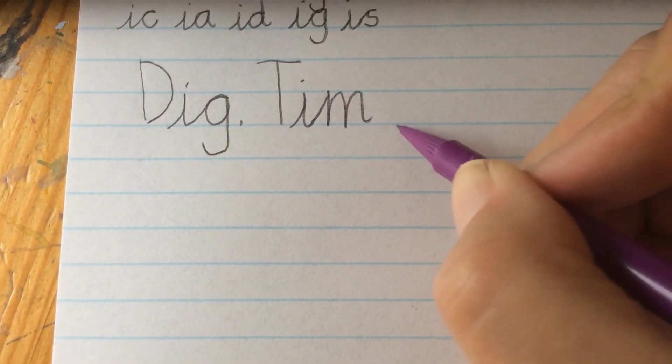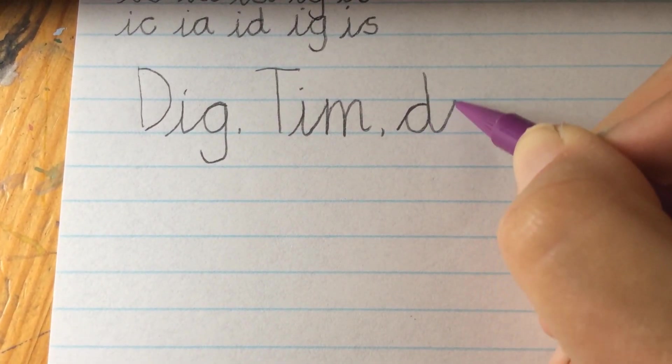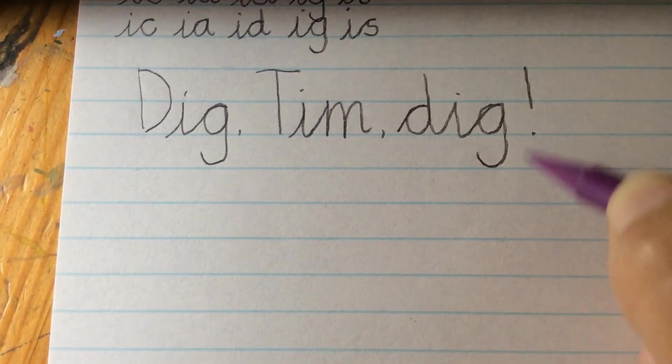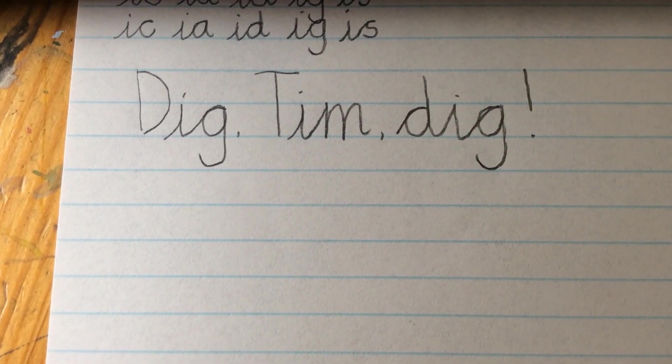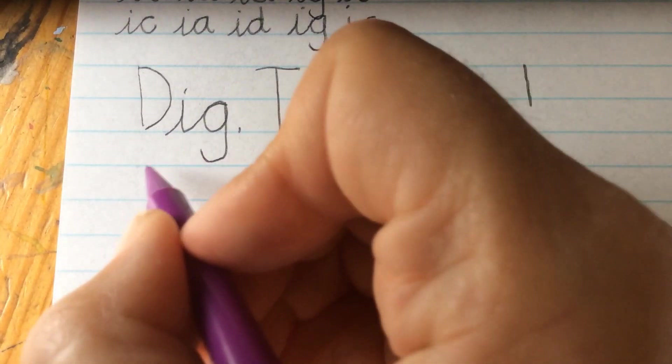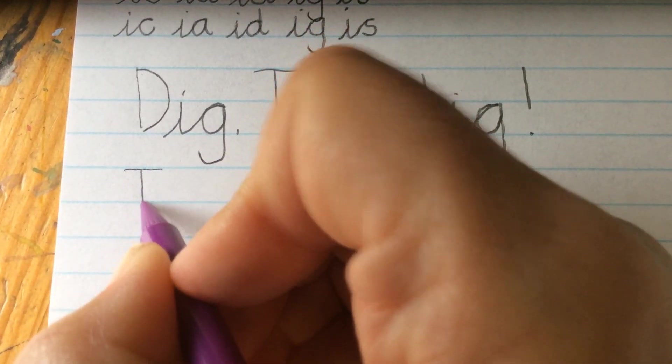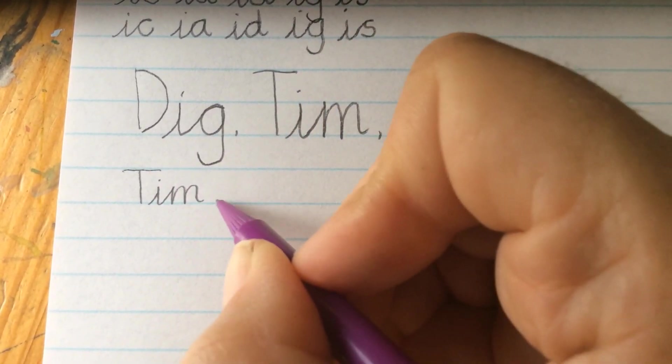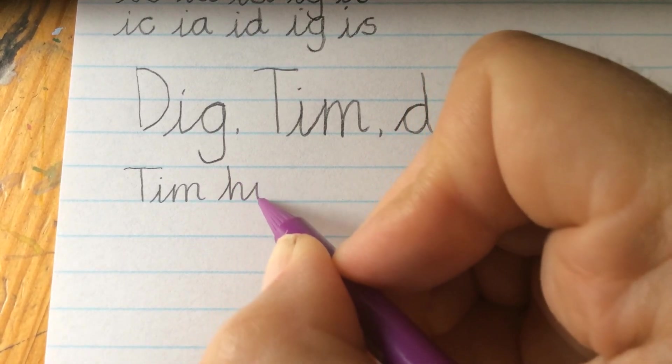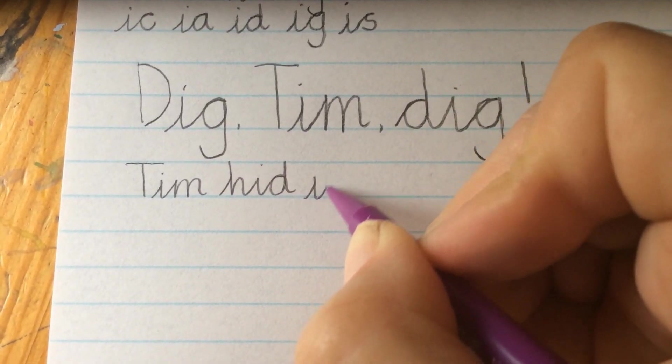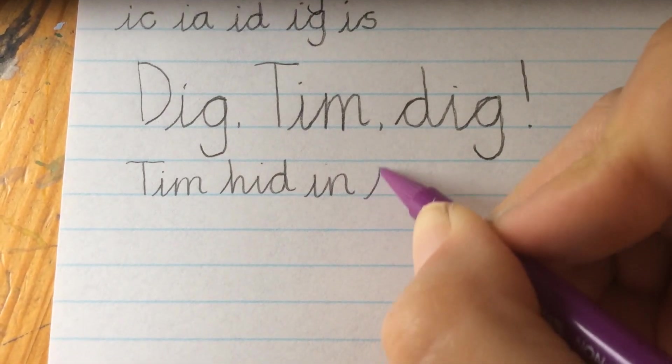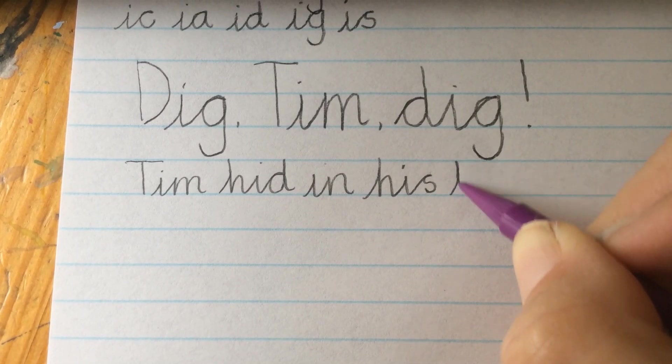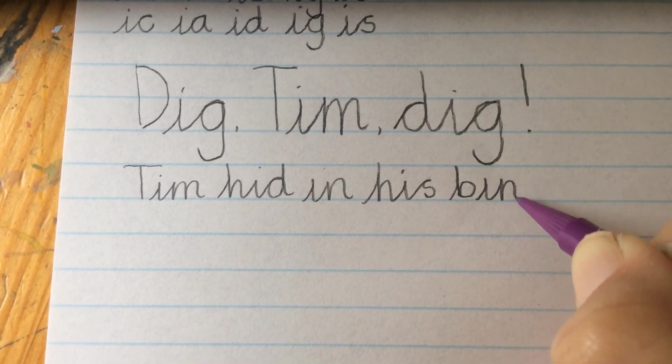the same size. When you're happy, then we can go back to the correct letter size and use our lines correctly, always aiming for those diagonal joins. Remember, b's don't join on.